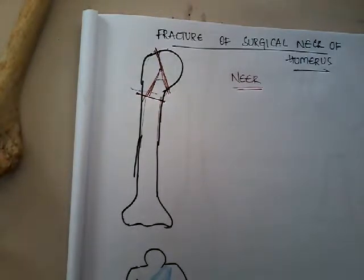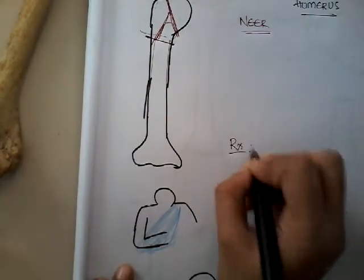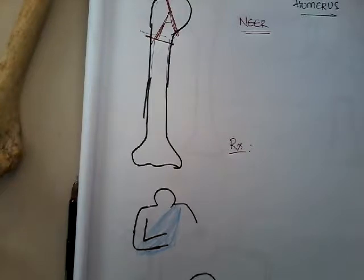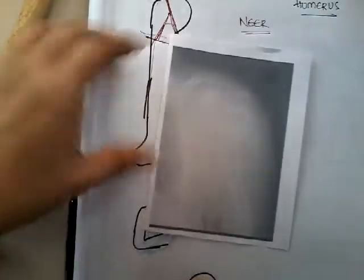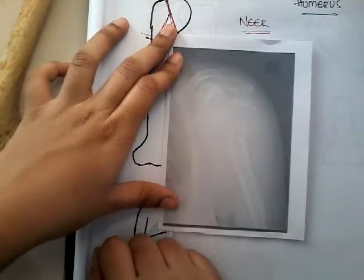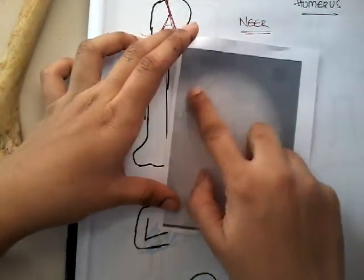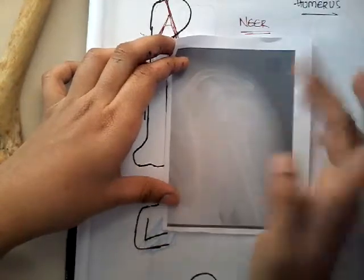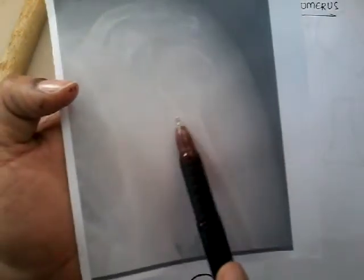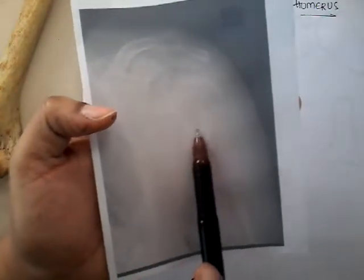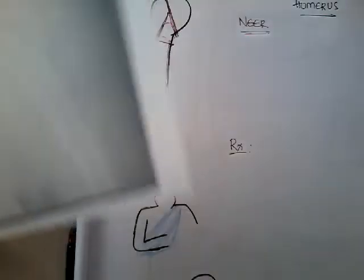Diagnosis is by an X-ray. Once you do an X-ray, you will see the clavicle, the scapula — though not all are clearly visible — but one thing is clear: this is the head with the greater and lesser tuberosity, and this is the shaft of the humerus. Here you can see there is a fracture. This is fracture of surgical neck of humerus.